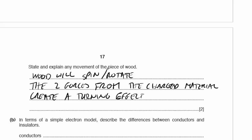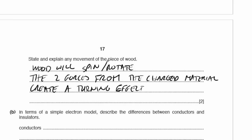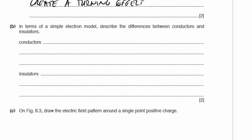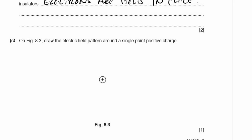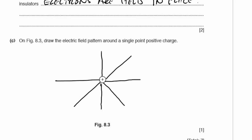Part B: in terms of a simple electron model, describe the difference between conductors and insulators. Conductors have a large number of free conduction electrons that are able to move around. In insulators, the electrons are held in place and cannot move freely. Part C: draw the electric field pattern around a single positive point charge — radial lines pointing outward from the charge, representing the direction of motion of a small positive test charge.